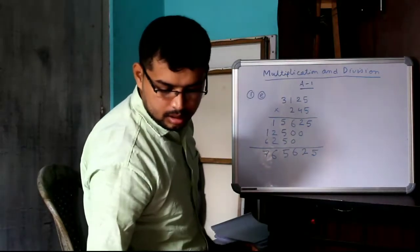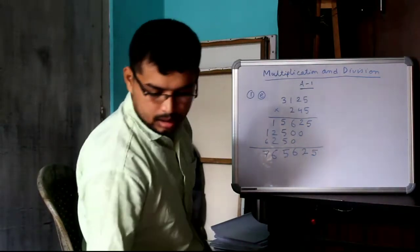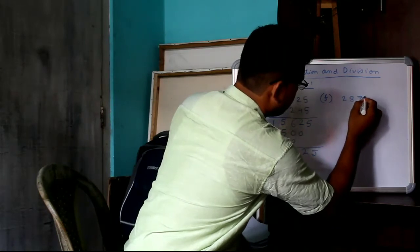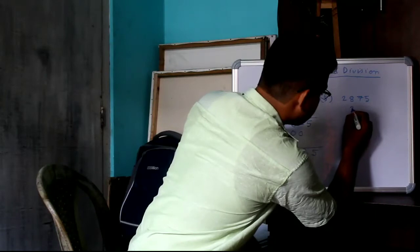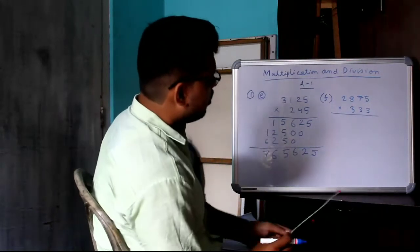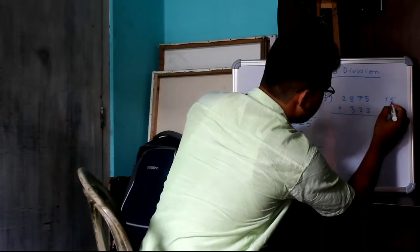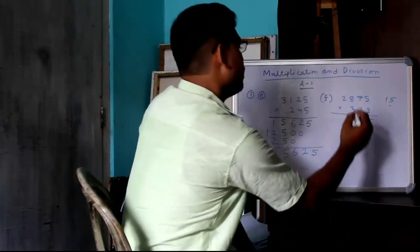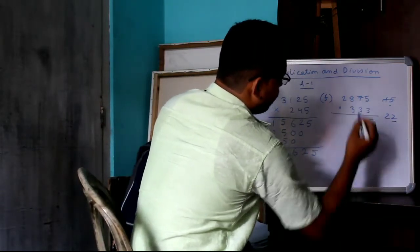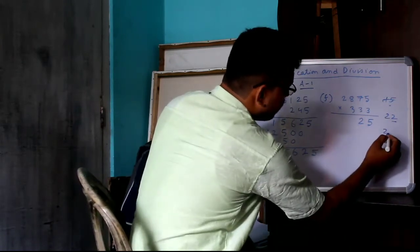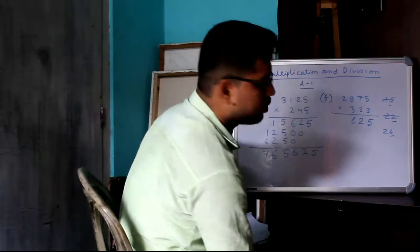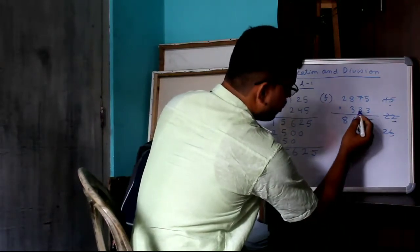Next, F: 2875 x 303. See, 3 x 5, 15, 5 will come, 1 is going. 3 x 7, 21, 21 plus 1, 22, 2 will come. 3 x 8, 24, 24 plus 2, 26, 6 will come. 2 is there. 3 x 2, 6, 6 plus 2, 8.